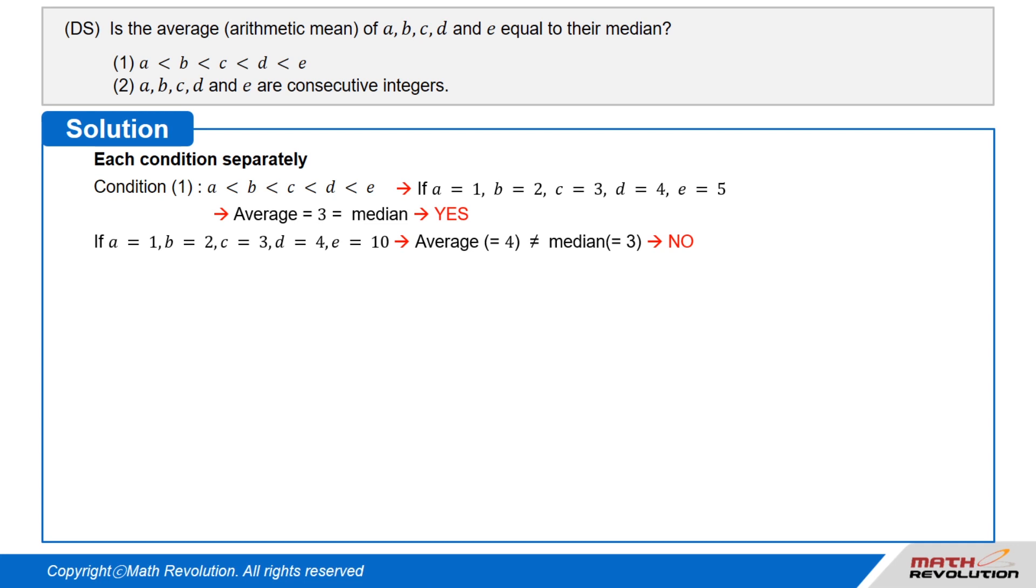But if A equals 1, B equals 2, C equals 3, D equals 4, and E equals 10, then their average or arithmetic mean is 1 plus 2 plus 3 plus 4 plus 10 over 5, which equals 4, which is not equal to their median, 3, so we get no.